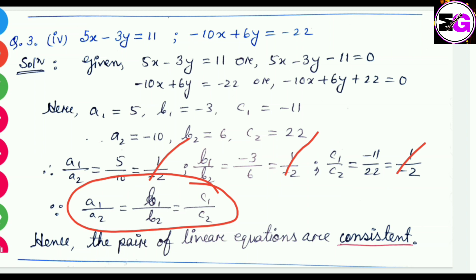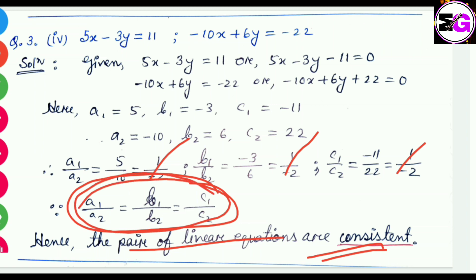Since a1/a2 equals b1/b2 equals c1/c2, we can clearly say that the pair of linear equations are consistent. I hope this video will help you. If you have any problem, please write in the comment box and I will try to solve your queries. Thank you.